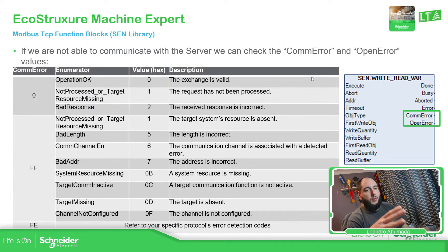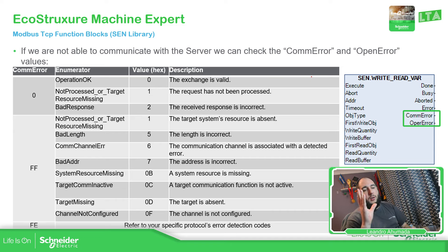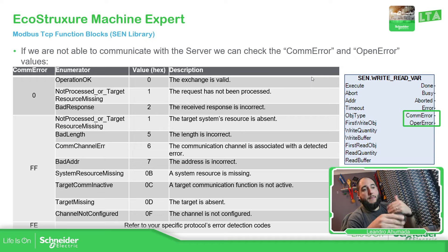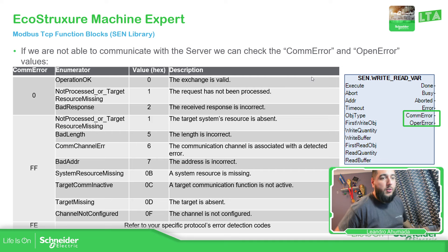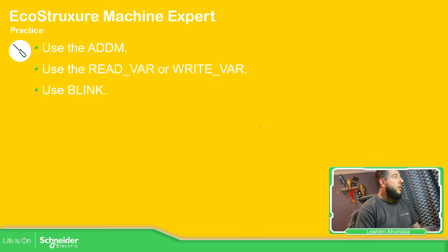What I'm going to give you in this particular video is just a single read and write or multiple write using just one of these function blocks. The best approach would be to make some kind of cascade of function blocks so you can execute them one by one — but that will be in another video. So now let's just use the ADDM, the read-write bar, and use the blink.